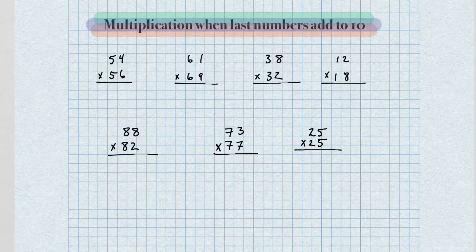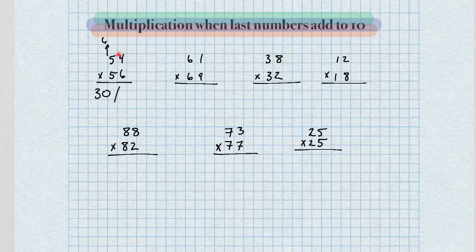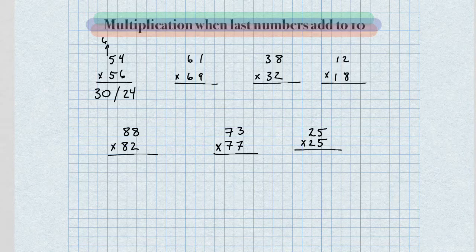The next number up from 5 is 6. So for the left-hand side, we multiply 5 by 6, which gives us 30. And then for the right-hand side, we simply multiply the two last digits together — 4 times 6 in this case is 24. So our answer is 3,024.